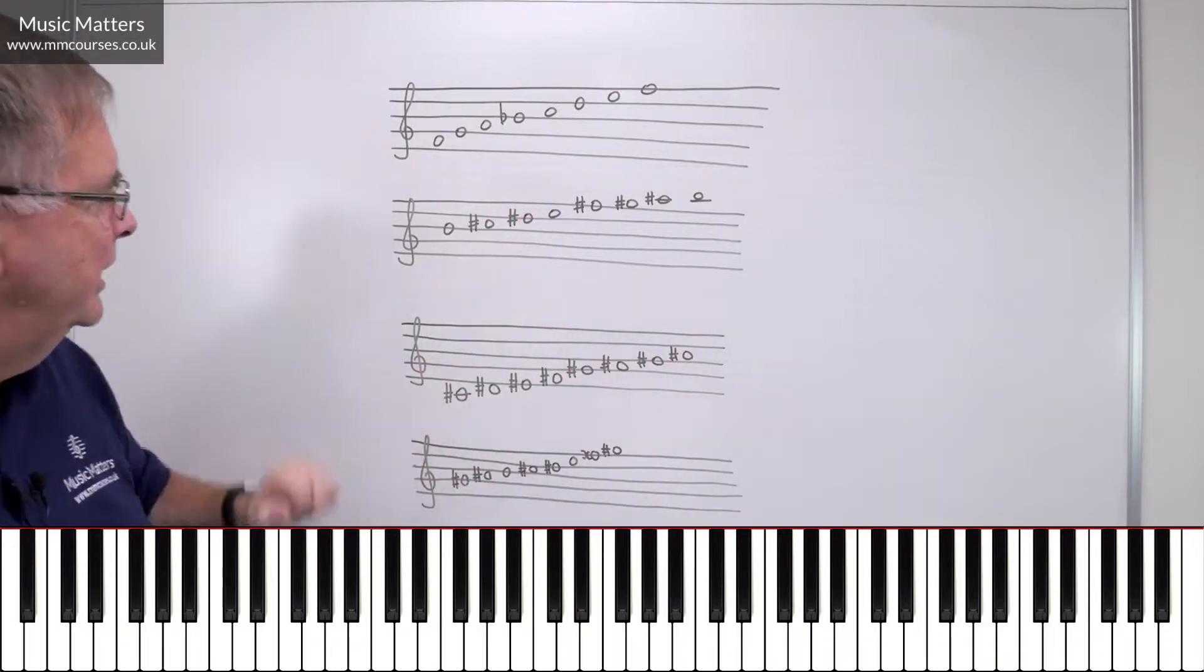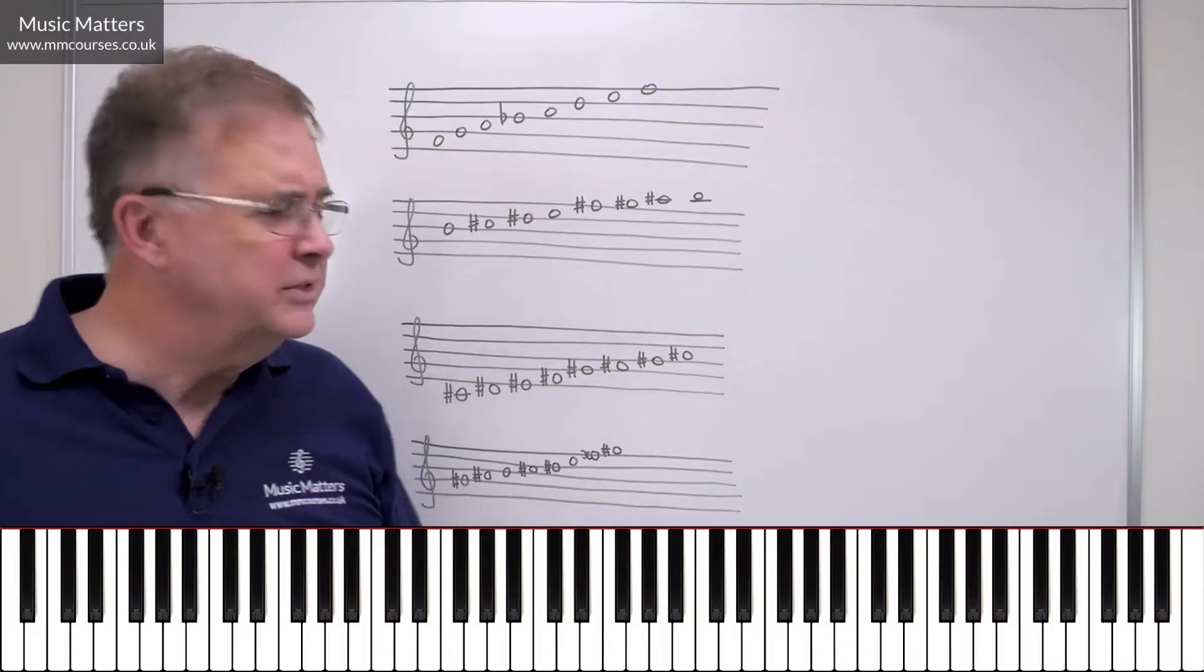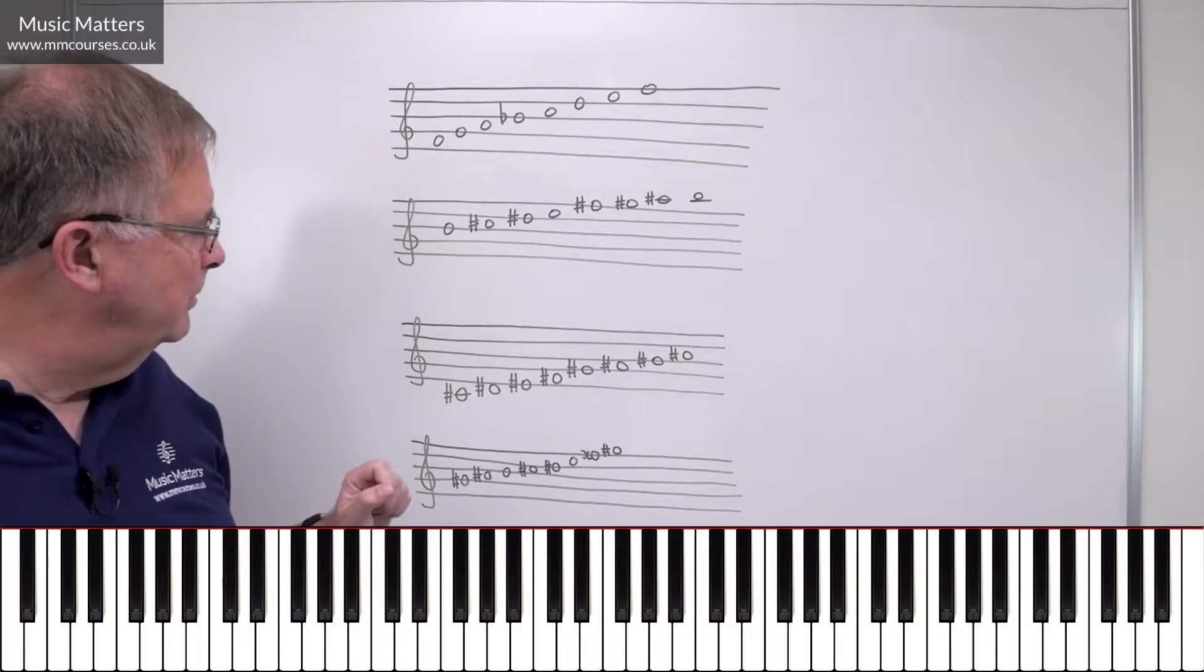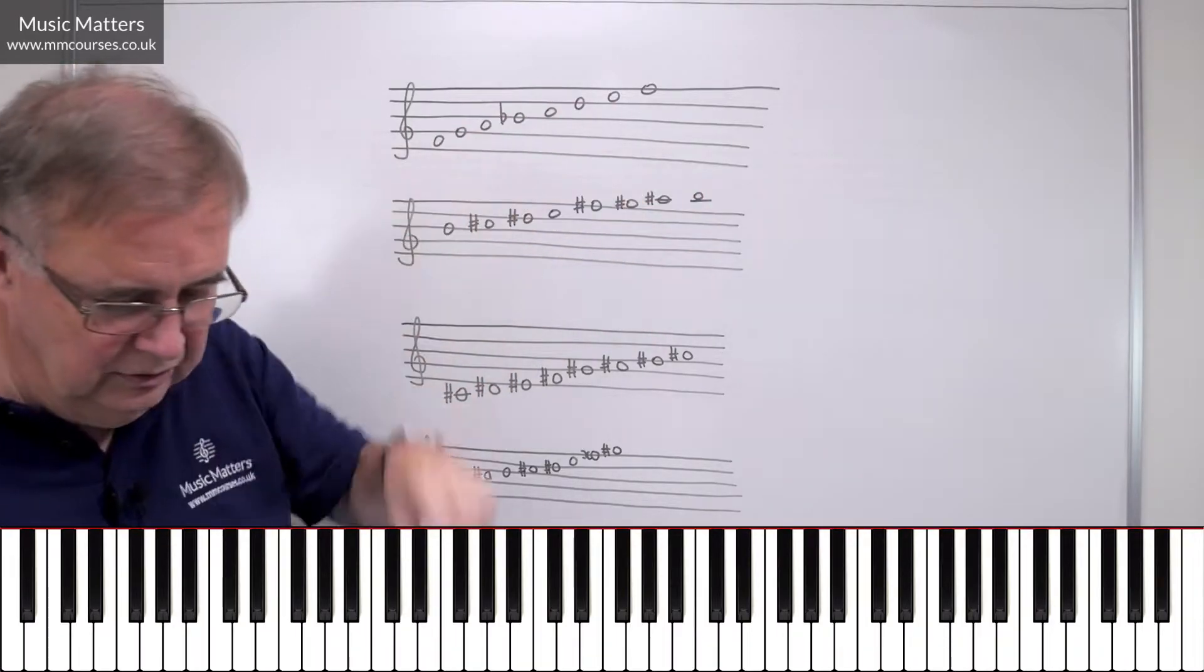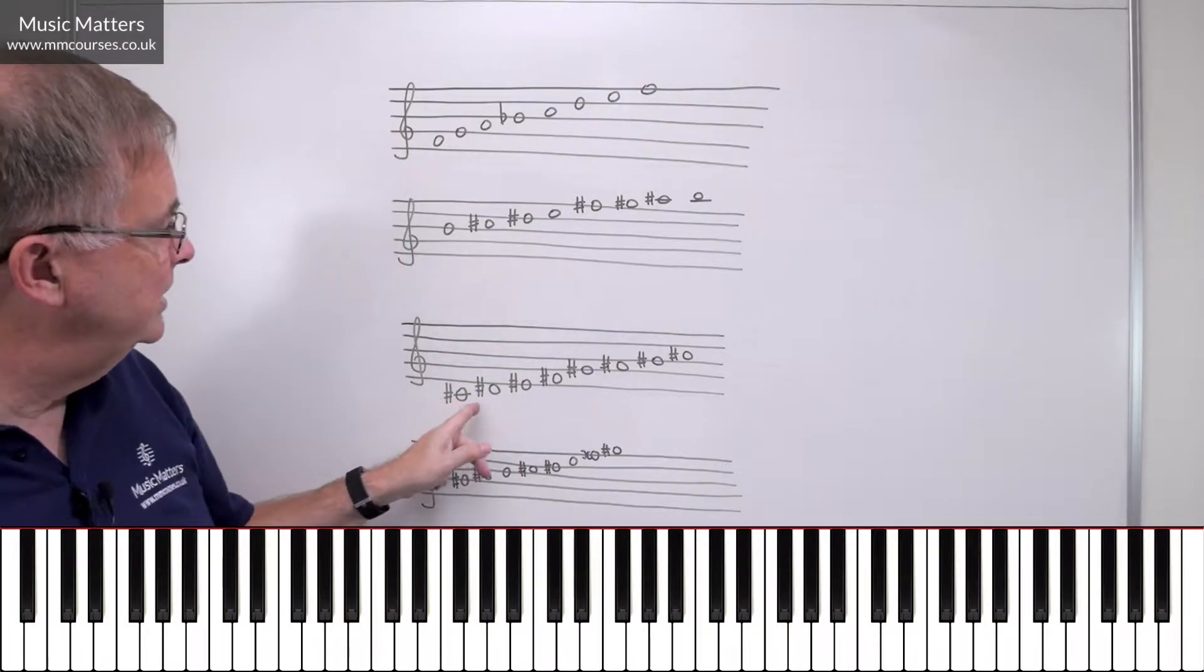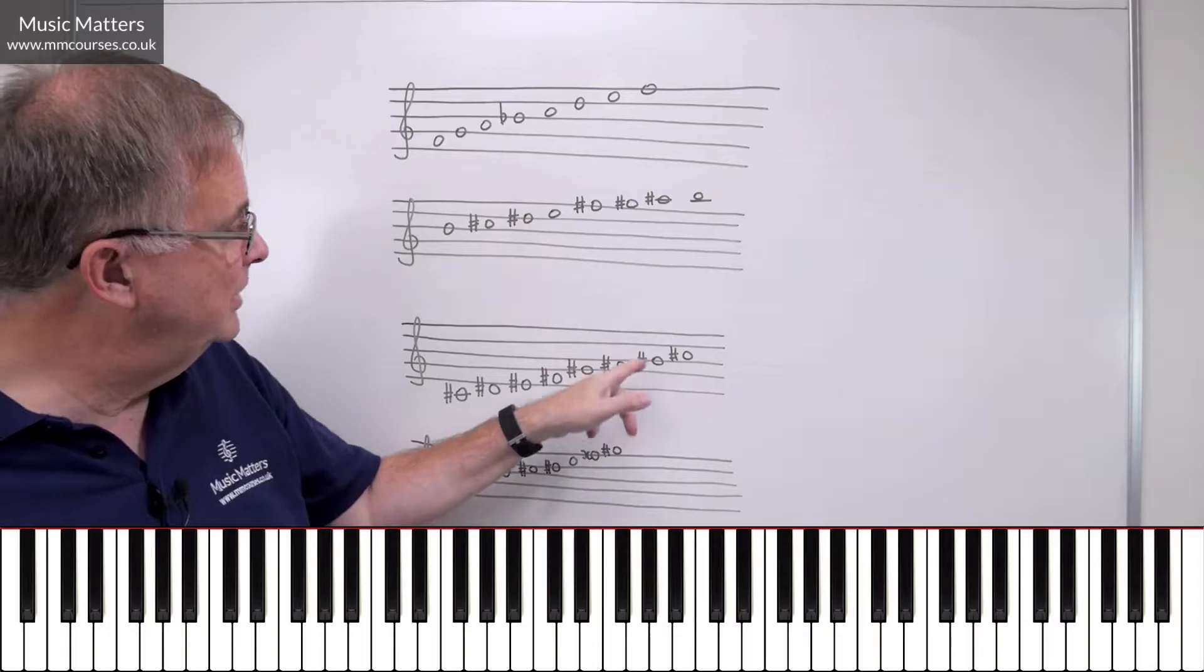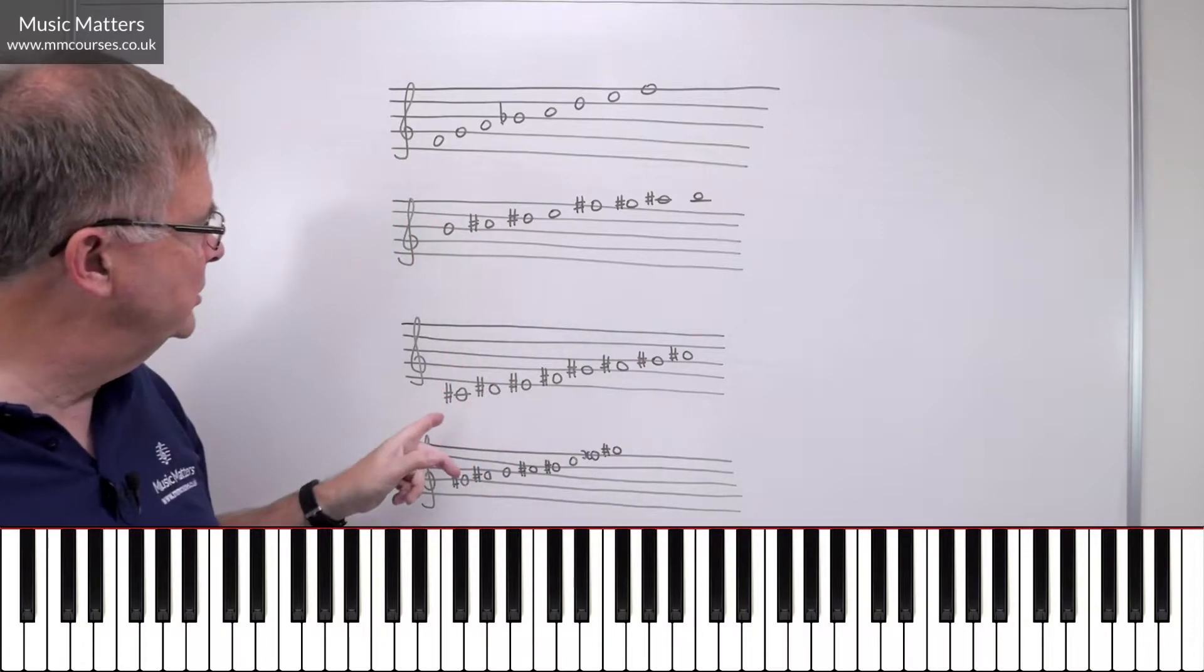So here's another example. So here I am in C-sharp major, and this is where people really start asking questions because in C-sharp major, if I go tone, tone, semitone, tone, tone, tone, semitone, I end up with all the notes having to be sharp. I've got one of each kind, C, D, E, F, G, A, B, C, but follow the pattern tone, tone, semitone, tone, tone, tone, semitone, they all end up sharp.